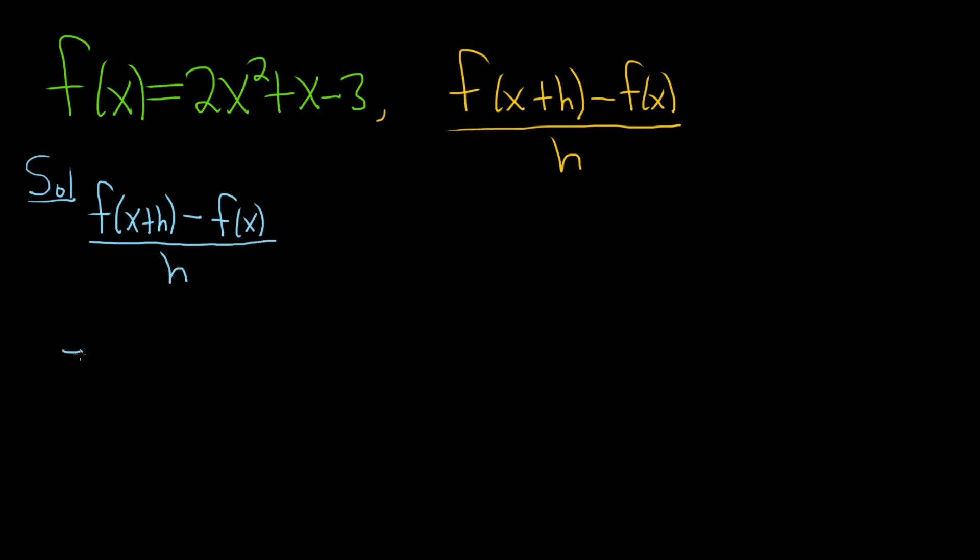And this is equal to, so now you just have to figure out what this is, this f of x plus h. Let me do it up here. f of x is 2x squared plus x minus 3. So f of x plus h basically just means that you replace every x with x plus h.